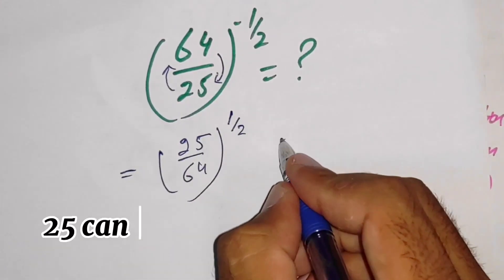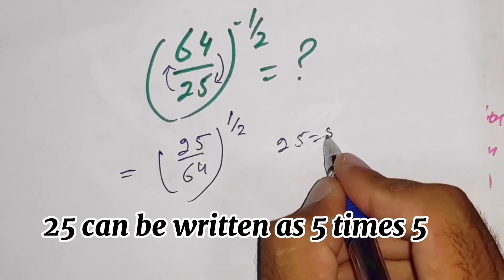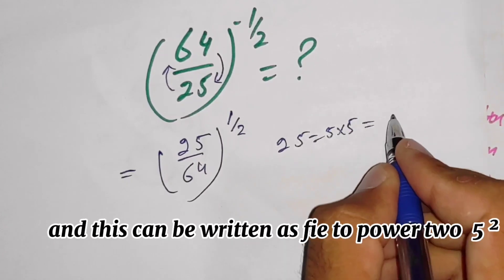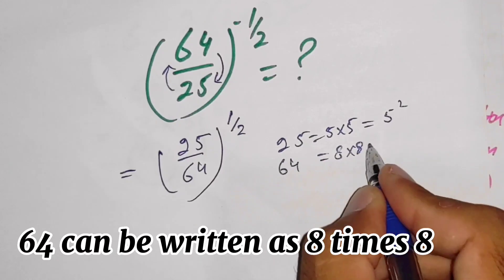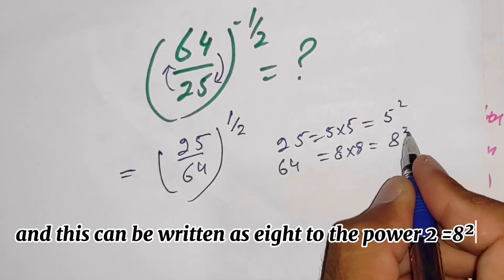25 can be written as 5 times 5, and this can be written as 5 to the power 2. 64 can be written as 8 times 8, and this can be written as 8 to the power 2.